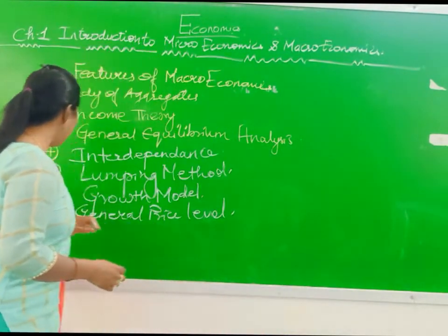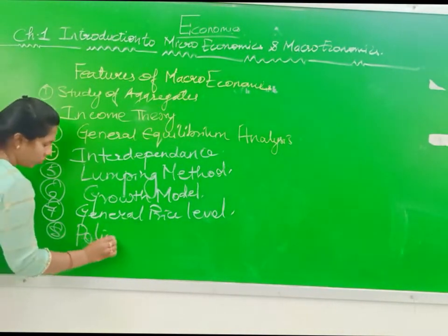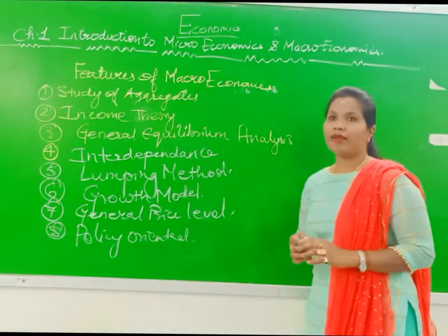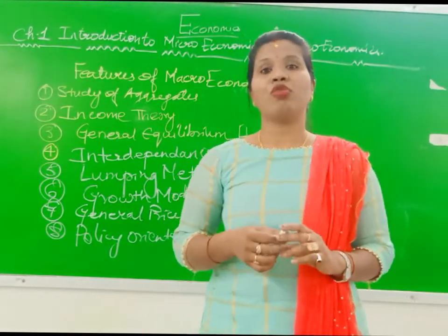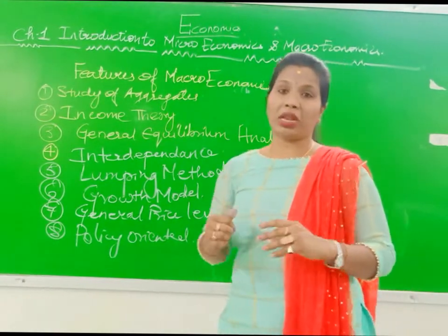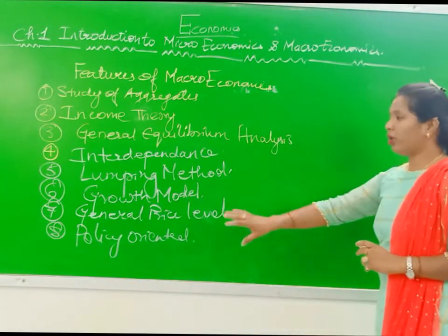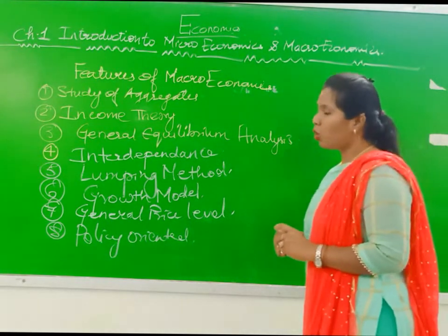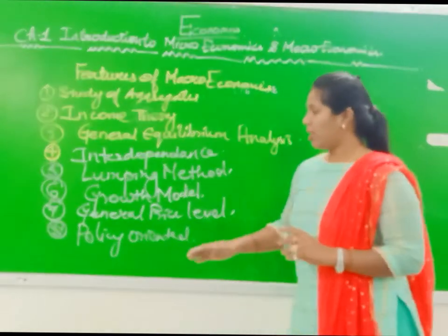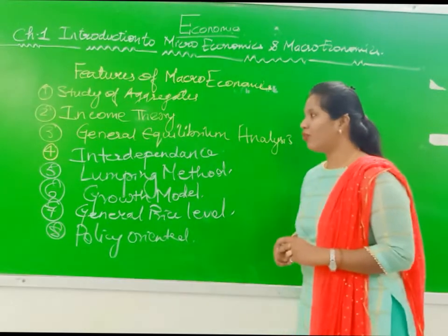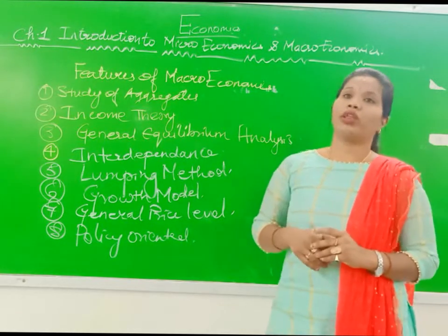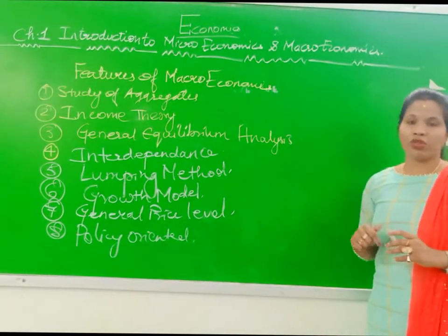The eighth and last feature is policy oriented. For economic growth and development, macroeconomics orients and forms policies so that a country can grow and develop. According to Keynes, macroeconomics is policy oriented — it suggests suitable economic policies to promote economic growth, general employment, and to control inflation and depression. So the eight features are: study of aggregates, income theory, general equilibrium analysis, interdependence, lumping method, growth model, general price level, and policy oriented.